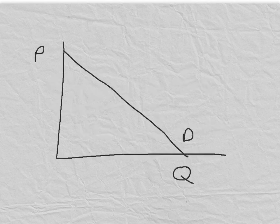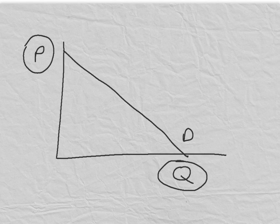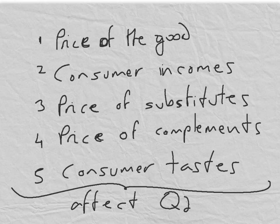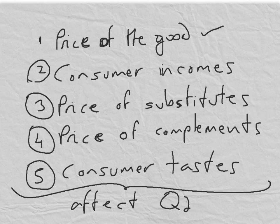We know that the demand curve shows the price of the good itself against the quantity that consumers are willing to buy. It is a downward sloping curve. But what we have to realise is that apart from the price of the good, there are actually at least four other factors that affect the quantity that consumers are willing to buy.